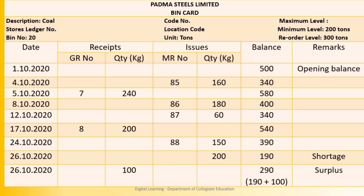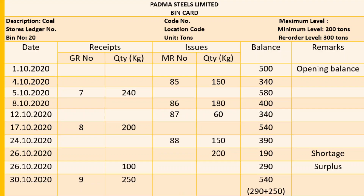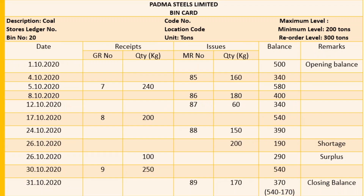On 30th, receipt against GR No. 9, 250 tons — closing balance increases. 290 plus 250 gives closing balance of 540 tons. On 31st, issue against MR No. 89, 170 tons — closing balance is 540 minus 170, which comes up to 370 tons. So the closing balance in the bin card as on 31st October 2020 is 370 tons.